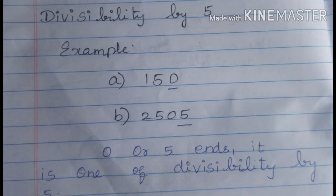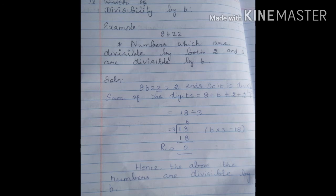Next, divisibility by 6. The number is divisible by 6 if it is divisible by both 2 and 3. The number 6 is divisible by 2 and 3. We can apply the rules from divisibility by 2 and 3. If the number is divisible by 6, we check using the rules of 2 and 3.